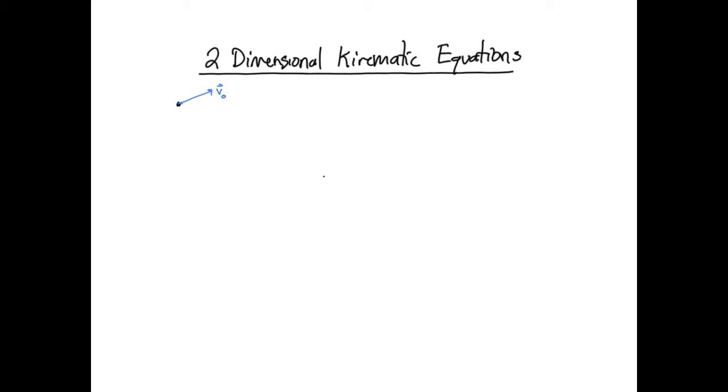That is, at t equals zero, the velocity is in this direction and of that magnitude. Now let's say this object also has an acceleration, which is pointed in a different direction than the velocity. So first let's try to imagine or guess the motion of this object. What will the trajectory of this object be?